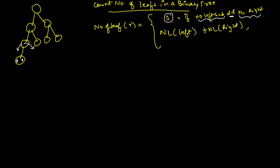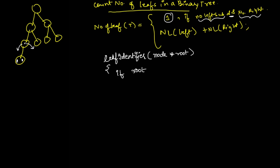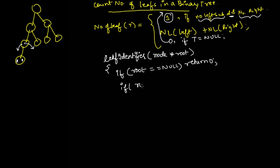Now let us convert this mathematical equation into a recursive function. The function name will be `leaf_identifier`, taking a parameter `node* root`. If root is equal to null, meaning there is no data, we return 0 — that is, if the tree does not exist.